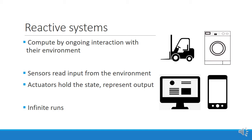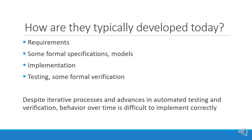How are these systems typically developed today? The typical development of reactive systems today consists of several phases: formulating the requirements, some formal specifications and models, an implementation, a lot of testing, and maybe some formal verification. However, despite iterative processes and excellent advances in testing and verification, behavior over time is difficult to implement correctly.